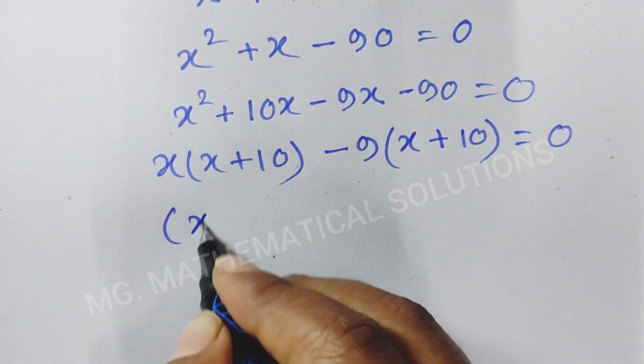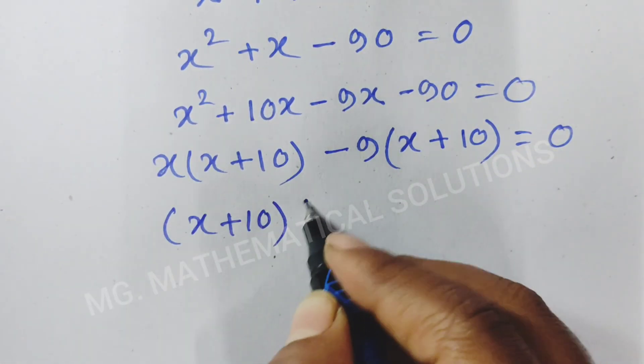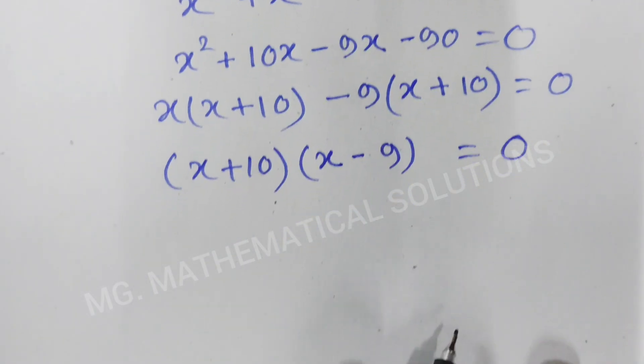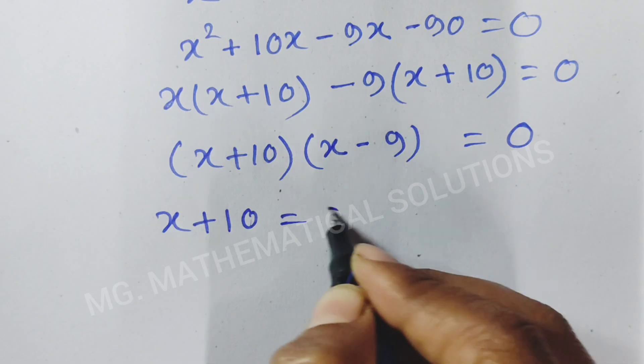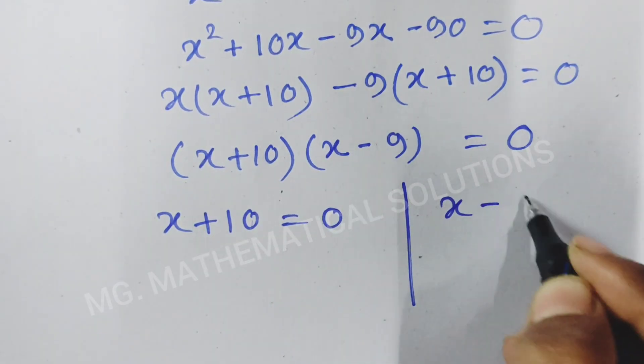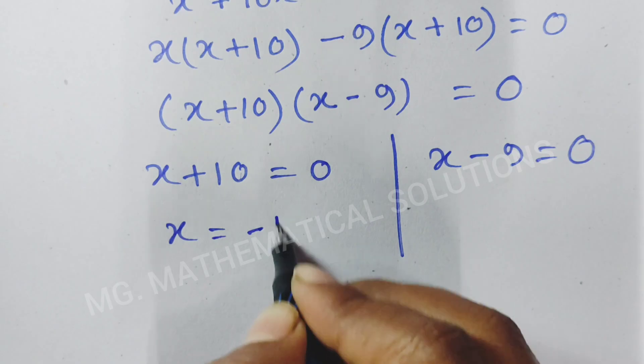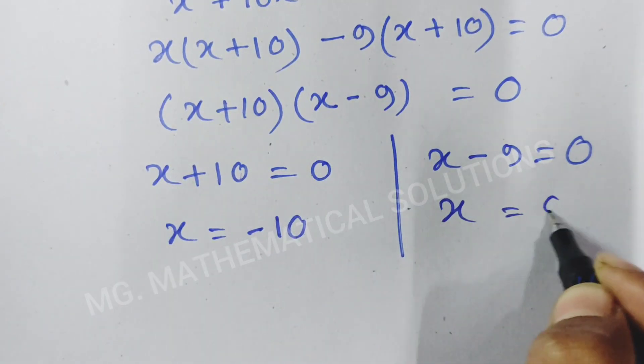Now, we take common x plus 10 so here x minus 9 equal to 0. We get two cases: x plus 10 equal to 0, x minus 9 equal to 0. Here x equal to minus 10 and here x equal to 9.